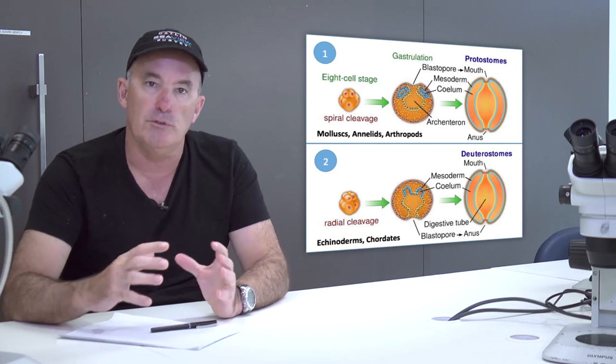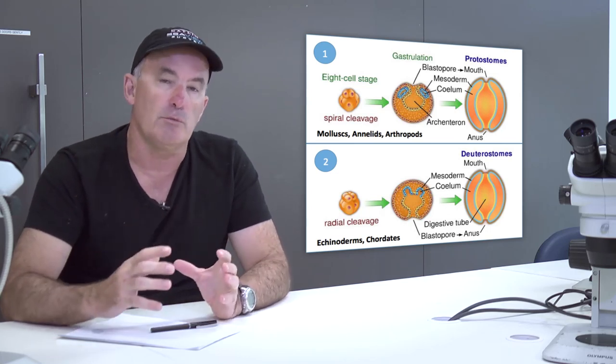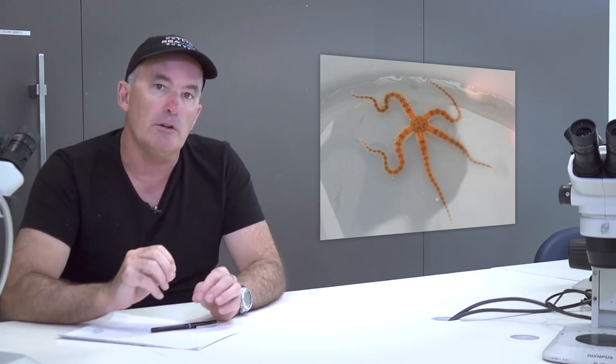Moving from the protostomes to the deuterostome invertebrates we come across the echinoderms which include sea cucumbers, starfish, crinoids, and brittle stars. There are also a great variety of different roles that echinoderms play within tropical coastal ecosystems.